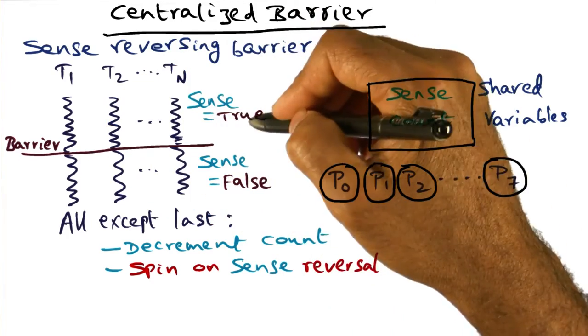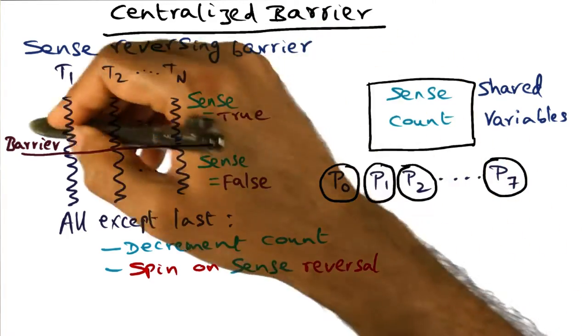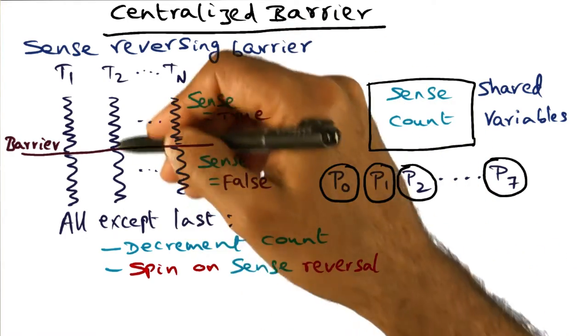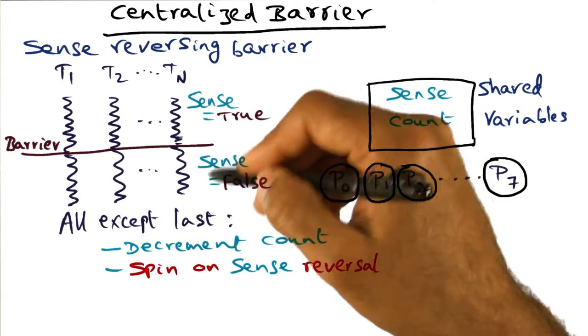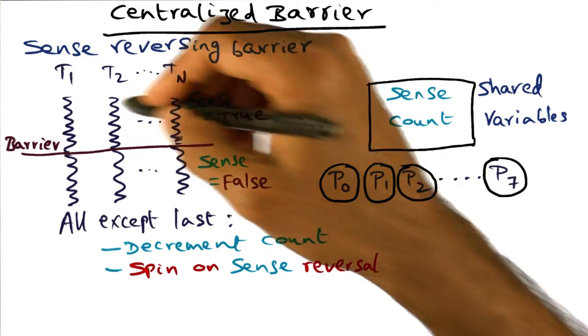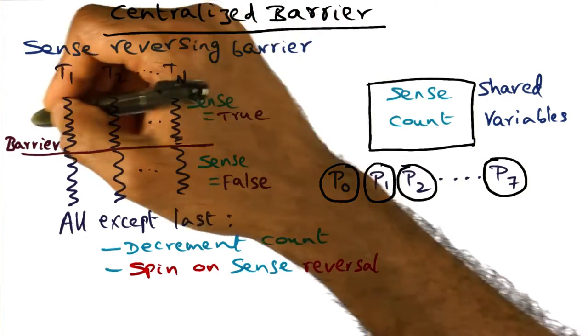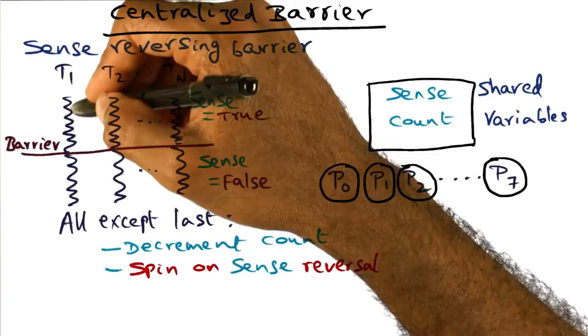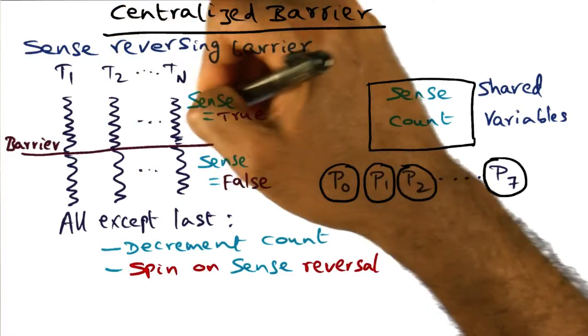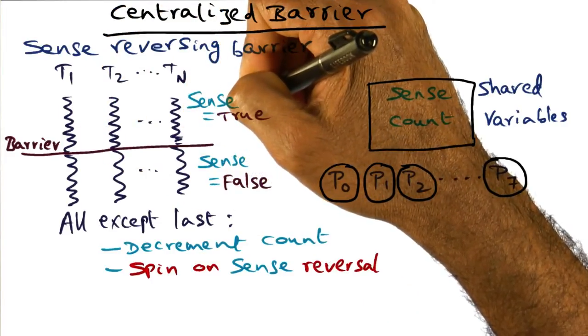Remember that the sense flag is going to be true for this barrier, and once everybody has progressed to the next barrier, the sense flag will become false. Let's say that we are executing the true barrier. In other words, all the threads are executing somewhere here. The sense flag is true.